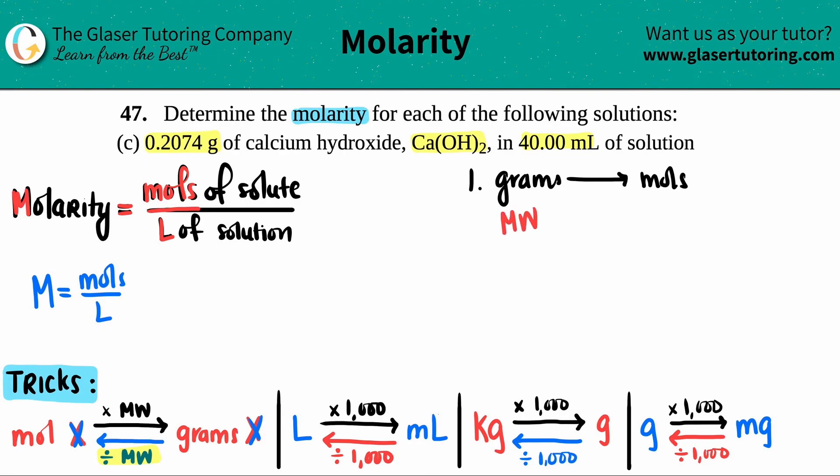What's the molecular weight of Ca(OH)2? Using the periodic table, calcium weighs about 40, and there's two hydrogens. I get a molecular weight of roughly 74.096 grams per mole. That's the unit for molecular weight.